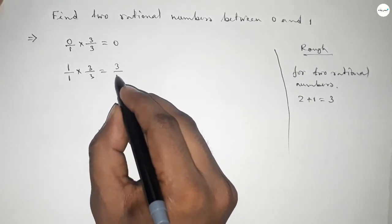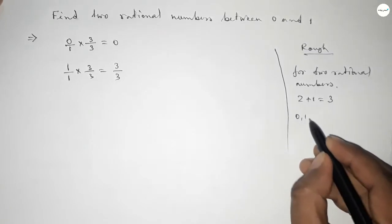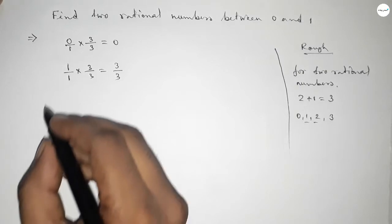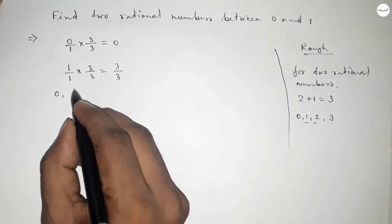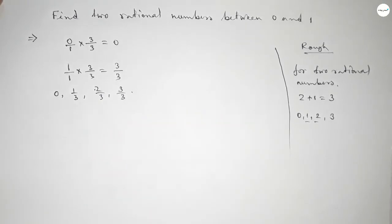Now between 0 to 3, we can write two natural numbers 1 and 2, and by this natural number we can form two rational numbers. So here all the rational numbers are 0, 1 by 2, 1 by 3, 2 by 3, and 3 by 3.